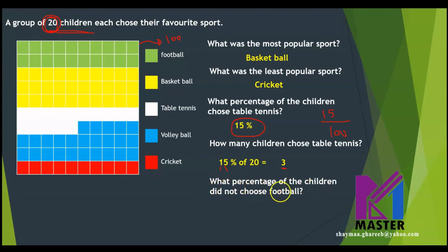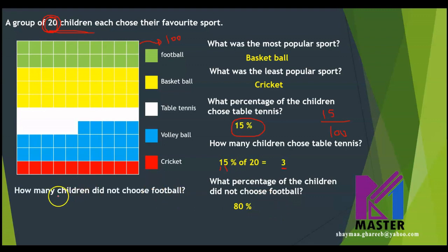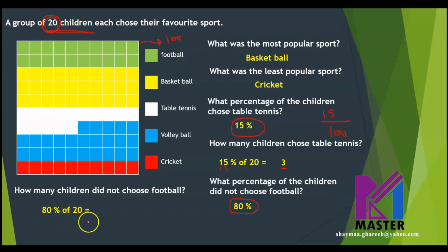What percentage of the children did not choose football? We know that 20% chose football. So what percentage didn't choose football? All the others — which is 80%. So 80% of the children didn't choose football. Now, how many children did not choose football? I need to calculate 80% of the 20 children. The 10% equals 2, so 80% equals 16 children who didn't choose football.